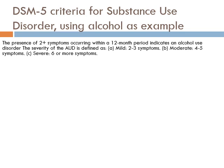To meet the criteria, an individual would need to have two or more symptoms occurring within a 12-month period to indicate a disorder. The severity of AUD, alcohol use disorder, is defined as mild — two to three symptoms — moderate, four to five symptoms, or severe, six or more symptoms.